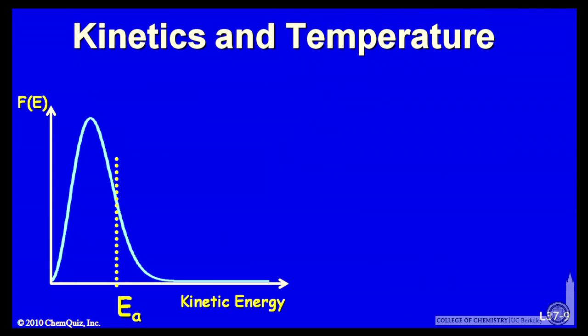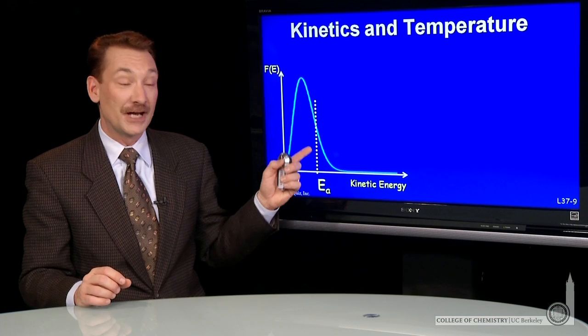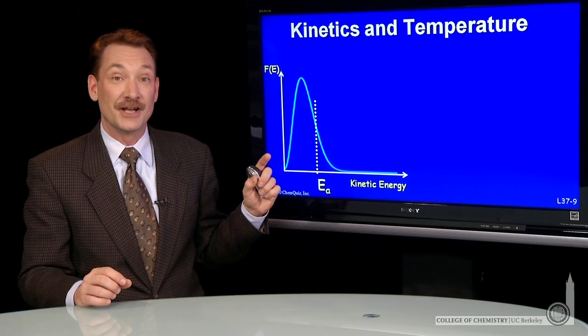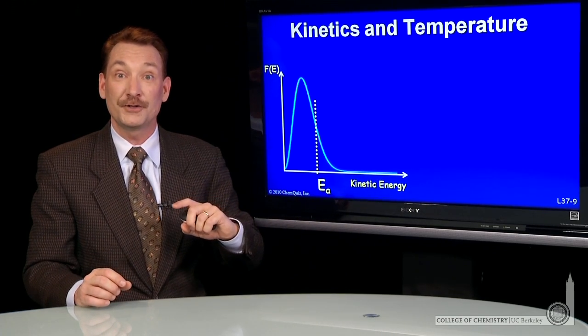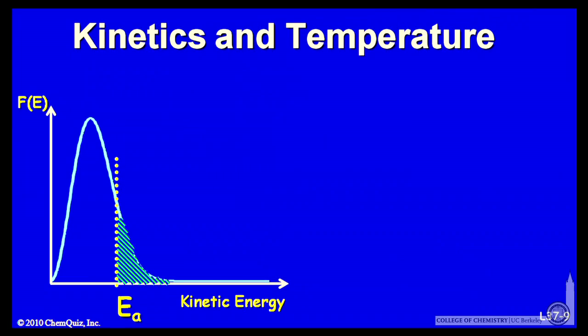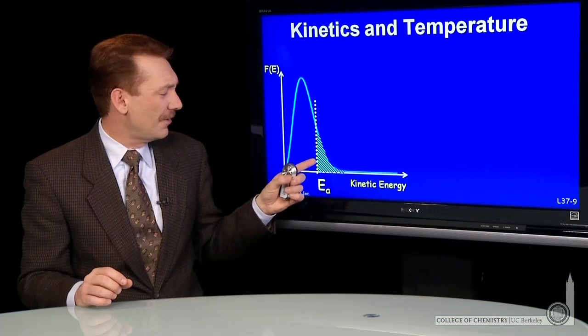If you plot as well the activation energy, then you can see for a given chemical reaction with a given activation energy at a specific temperature described by this Maxwell-Boltzmann curve, there's a fraction of molecules that have energies in excess of the activation energy.